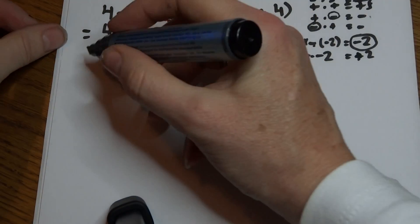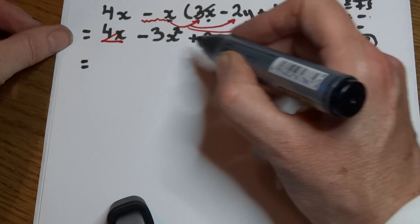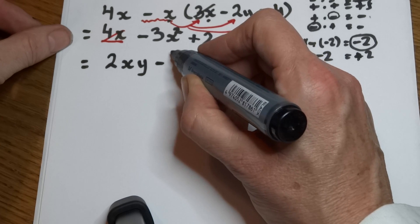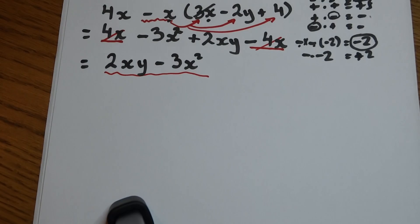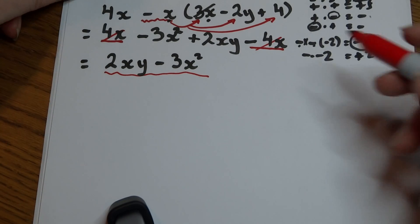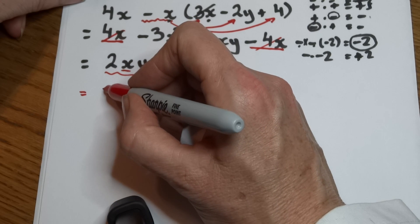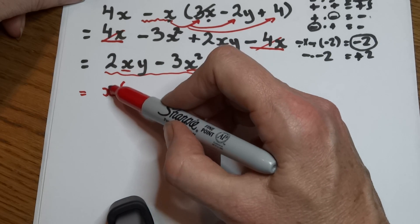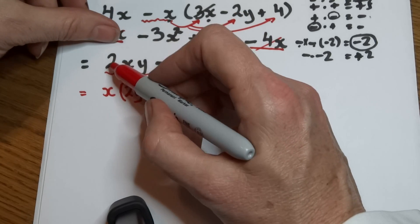Now we get our final answer. I'm going to write the positive expression first — we often do that in maths because it looks a little bit tidier — which is 2xy minus 3x squared. Now, what if I wanted to simplify this expression further? Well, I can, because here I have an x term and here I have an x term. So I could take the x outside the front of the brackets. What do I multiply x by to get back to 2xy? If I multiply x by 2y, what's left is 2y.